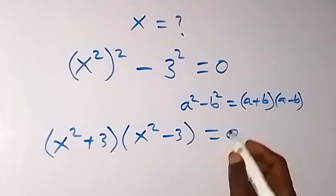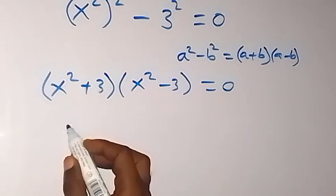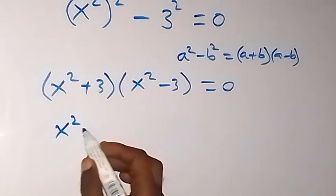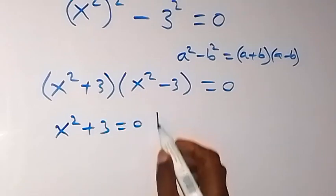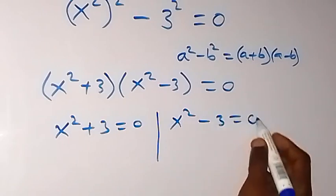Here we have two possible cases, which are x squared plus 3 equals 0, or we have x squared minus 3 equals 0.